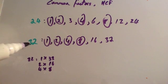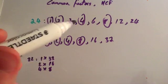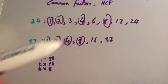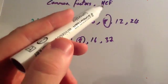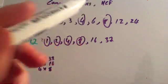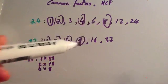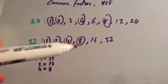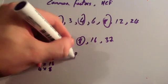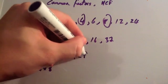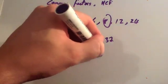That means that 24 and 32 are both divisible by 1, they're both divisible by 2, you can divide them both by 4, and you can divide them both by 8. The highest common factor is the largest number that you can divide both of these by. So the largest number is 8 — the HCF of 24 and 32 is 8.